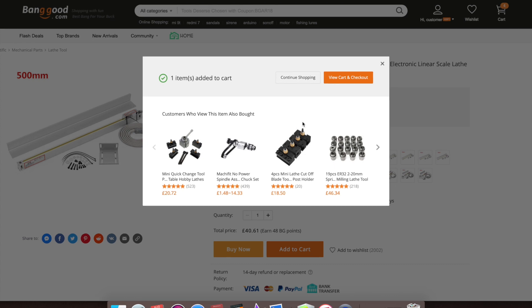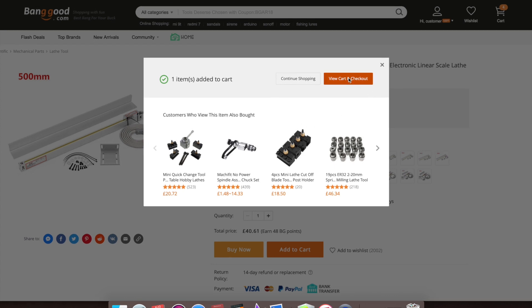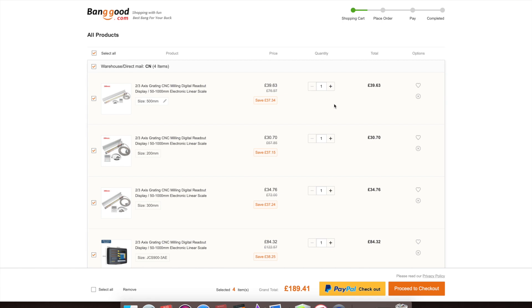So once you have the parts that you need, view your cart. And you can see here I've ordered 500 at £39, 200 at £30, 300 at £34, and the 3 axis display, it says there 3AE which is 3 axis display, that's £84. Now if that's OK, everything's right, you can press PayPal to check out or proceed to check out. If you've not got an account with Banggood you'll need to set up with your name, address, phone number, and email details.